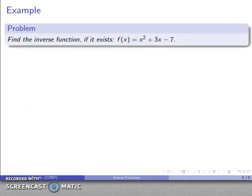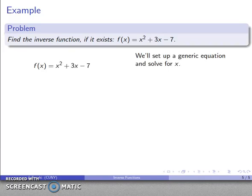All right. Well, let's take a look at another function. So f of x equals x squared plus 3x minus 7. We'll find the inverse function if it exists. So again, I'll set up a generic equation. f of x equals that. I'll let c equal that. And I'll try to solve for x.